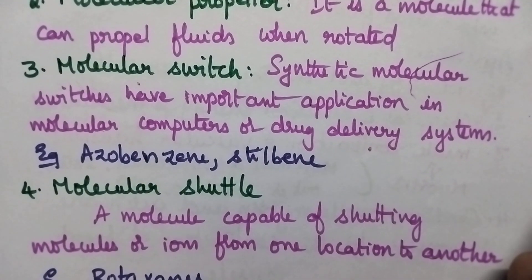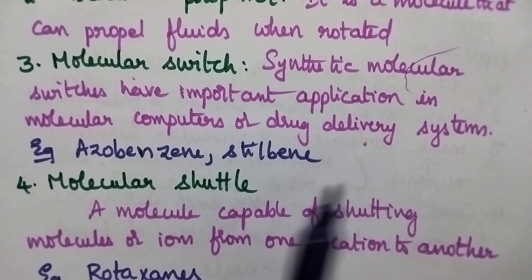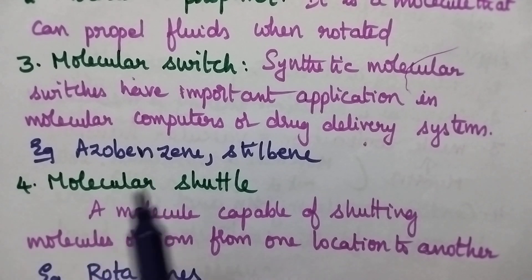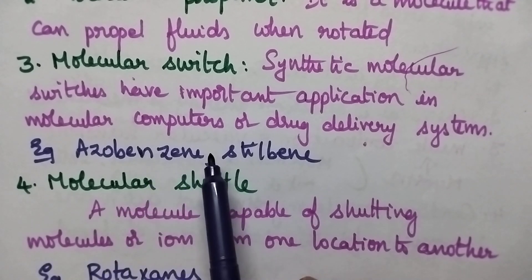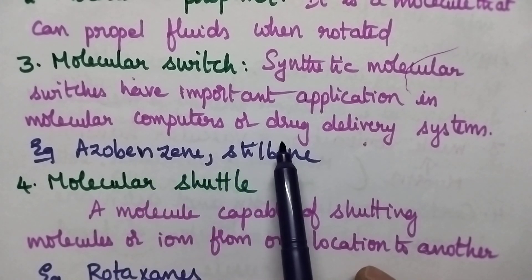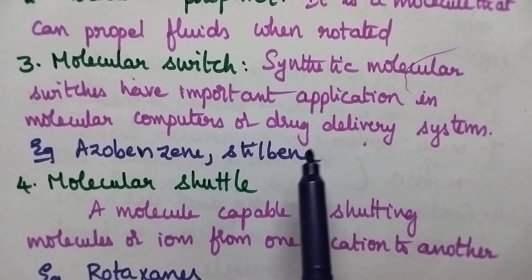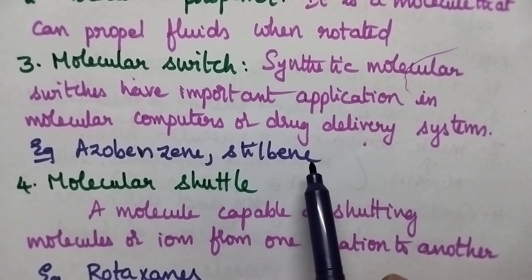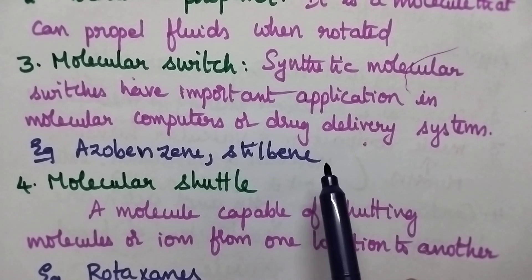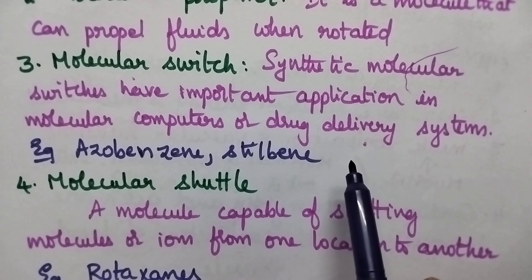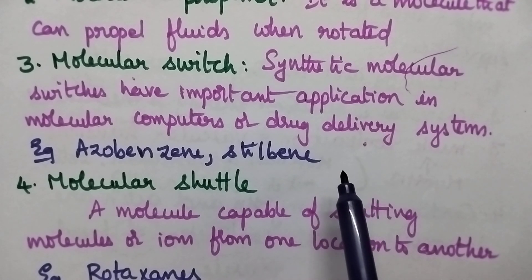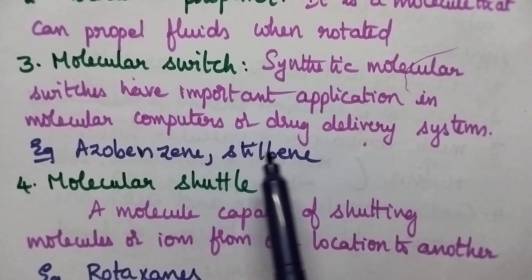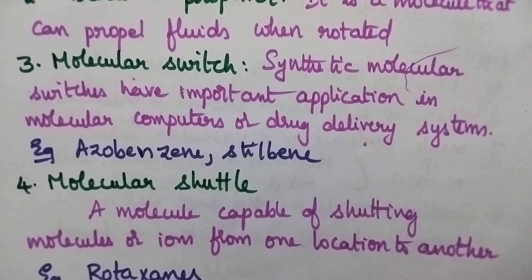A molecular switch is highly useful for designing molecular computers or drug delivery systems. Especially for this purpose, azo-benzenes and steel beans are highly useful, because they exhibit two or more different structures. As a result, they are highly useful for the designing of molecular computers and drug delivery systems.